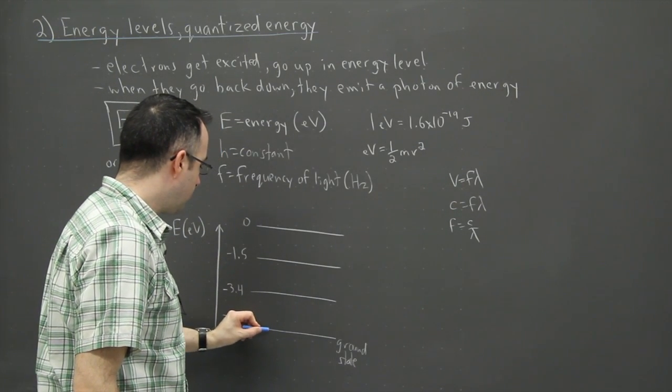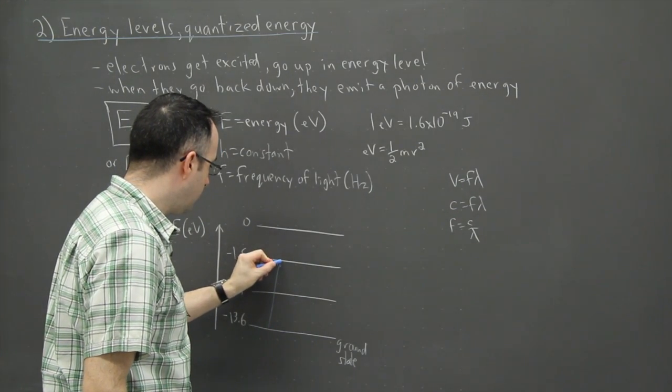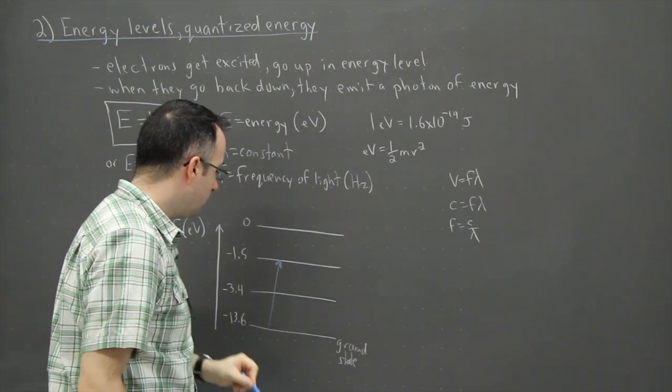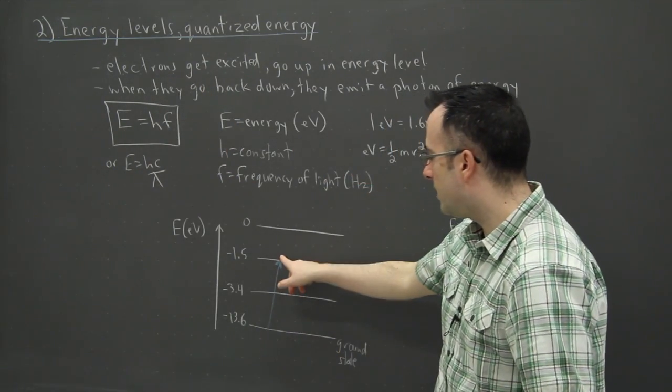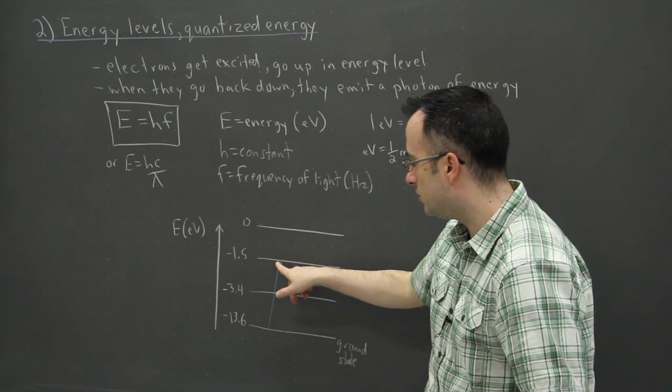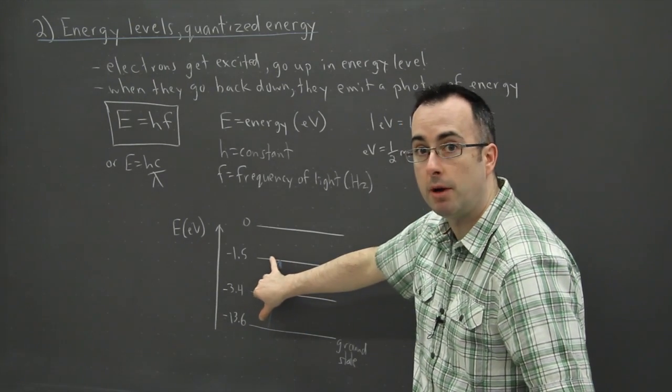So what happens is this: let's say it's an electron and it gets excited. Somehow you give it a bunch of energy, maybe it goes up here. Maybe you zapped it like what's happening in the fluorescent light right now, so it goes up an energy level. Maybe it goes from here to here—you give it enough energy to make that jump.